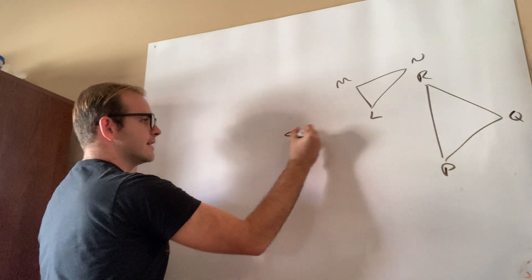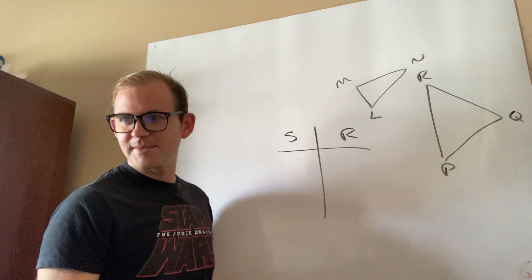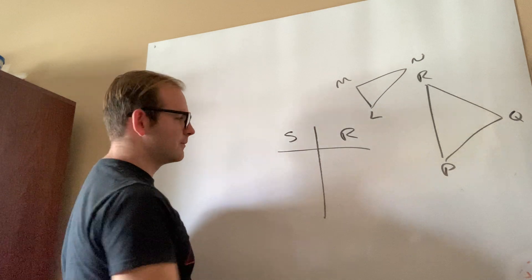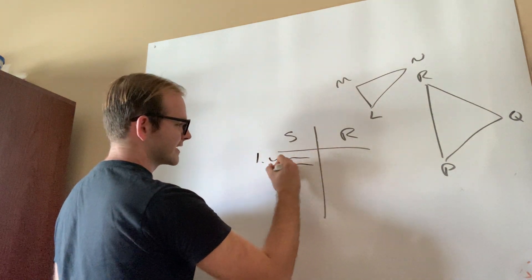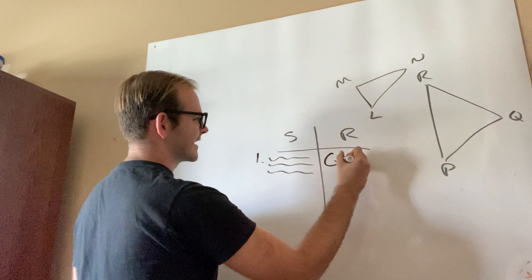All right. Now, for my statements and reasons, right, they actually give me, well, they give me a given, right? So I'm not going to actually waste your time by rewriting everything that's given to me here, but I'm just going to draw these, you know, lines, and I'm going to say that it's given.